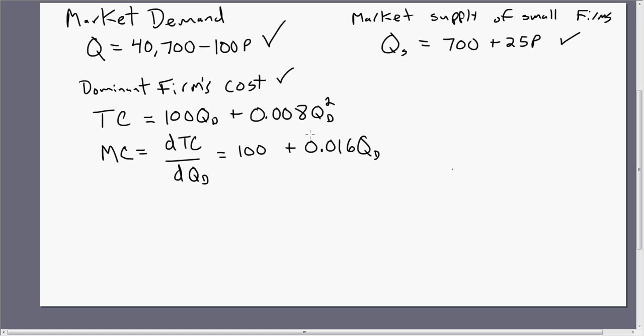So now we're going to solve this problem. We're going to try to find the market price, how much output the dominant firm produces, and how much output the smaller firms produce. The first thing we want to do is derive the dominant firm's demand equation.